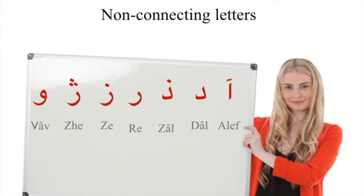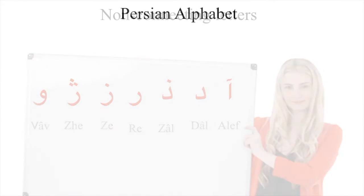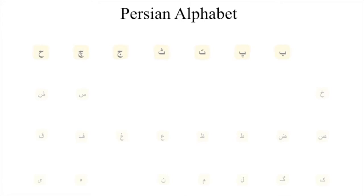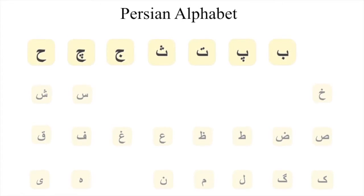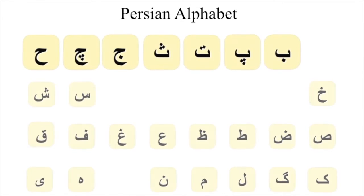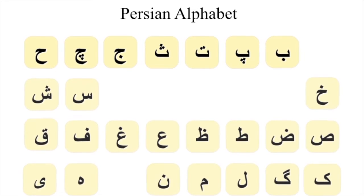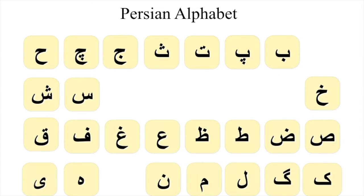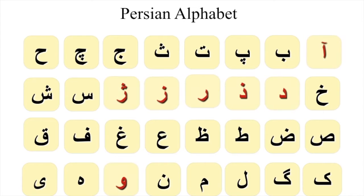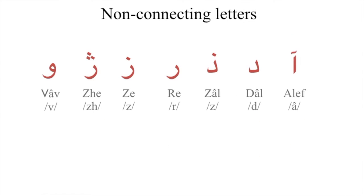In Persian, the letters are categorized into two types: connecting and non-connecting letters. There are 25 connecting letters and 7 non-connecting letters. In the next few minutes we are going to learn the 7 non-connecting letters. Please listen and repeat.